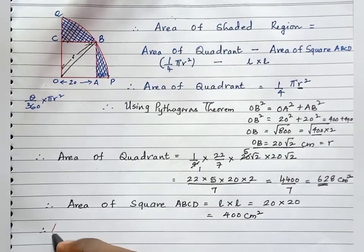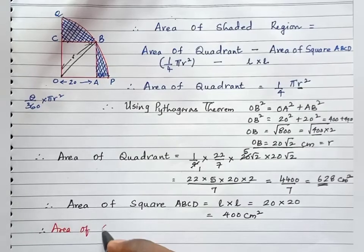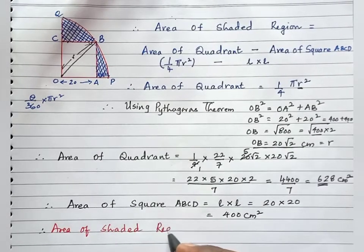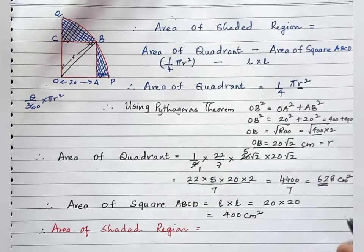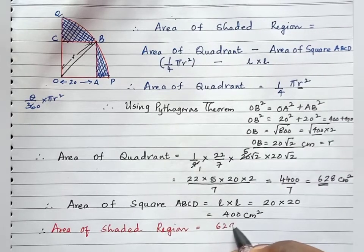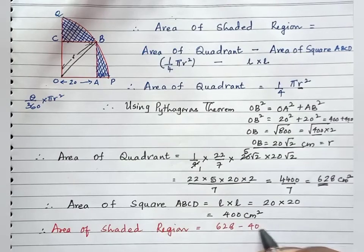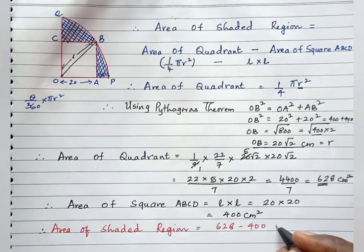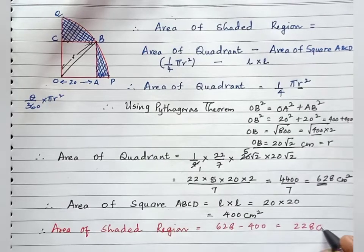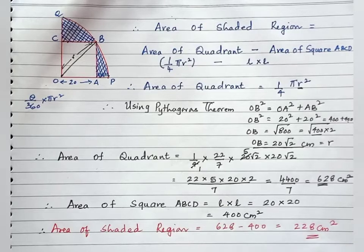Area of shaded region equals area of quadrant minus area of square OABC, which is 628 minus 400, giving 228 centimeter square as the required area of the shaded region.